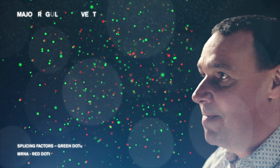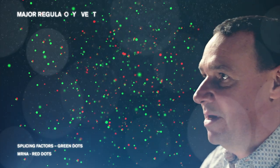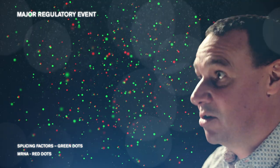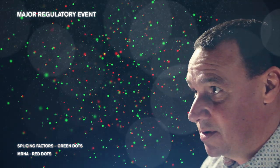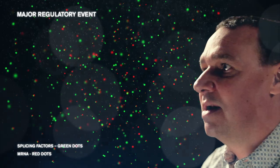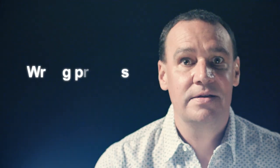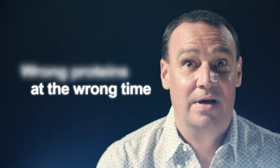Therefore, RNA splicing is a major regulatory event in cells that is controlled by proteins called splicing factors. A defect in splicing leads to a large number of diseases. We now have evidence that a large number of genetic diseases, including cancer, display aberrant splicing, leading to the generation of the wrong protein at the wrong time in the cell.